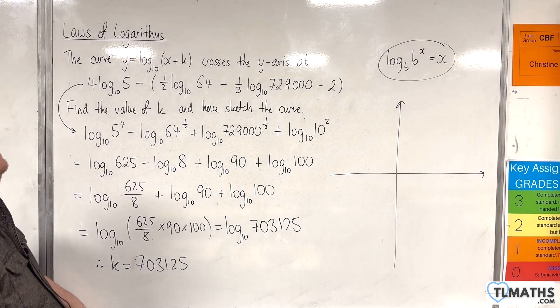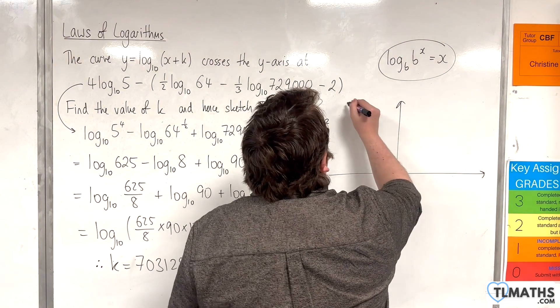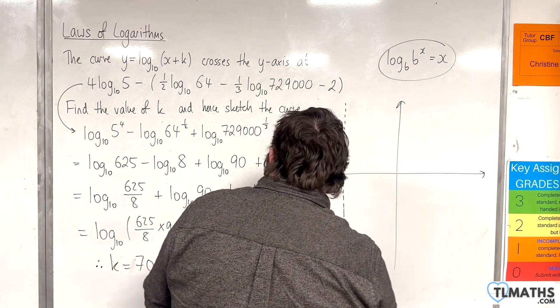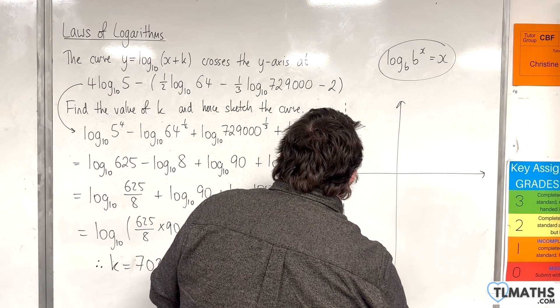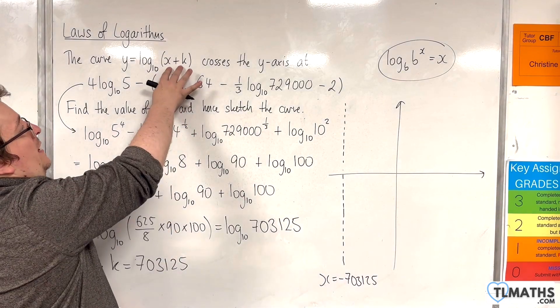So if that is the case, then it will have a vertical asymptote, x equals minus 703,125, because that value will make that bracket 0.